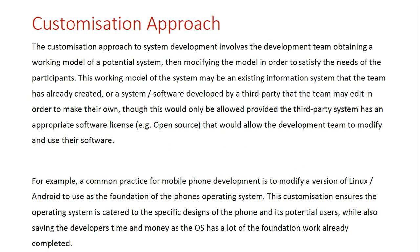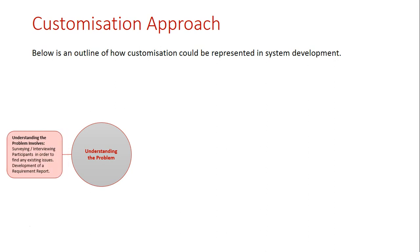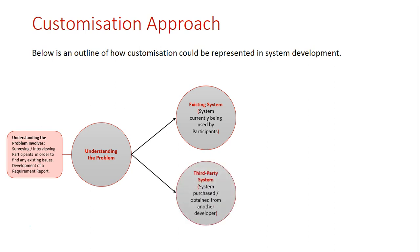Let's graphically take a look at how customization may look. We have our 'understand the problem' stage — the developer still needs to know the actual requirements of the system, so they interview the participants and survey them to find out what's required for the information system being built. They'll also look at the existing information system in that workplace to see if it's something they could customize and update with new technology.